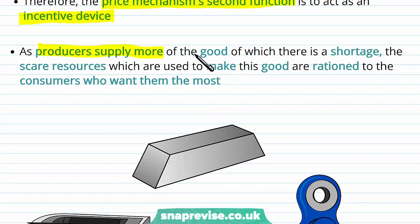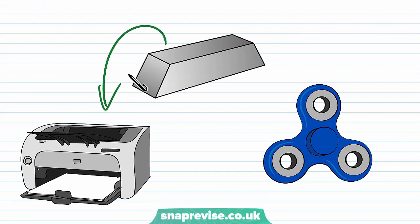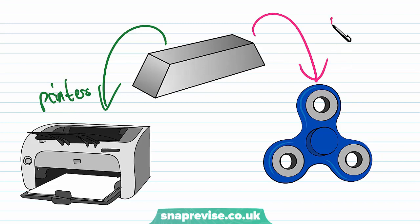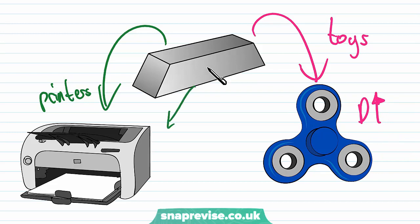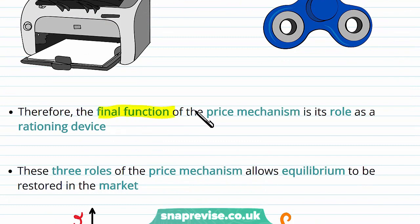As producers supply more of the good of which there is a shortage, the scarce resources which are used to make this good are rationed to the consumers who want them the most. For example, suppose we have metal which is used to make printers but also certain toys like fidget spinners. If fidget spinners are experiencing an increase in demand and there's excess demand, then there will be less production of metal into printers and more production into toys and fidget spinners. Therefore the final function of the price mechanism is its role as a rationing device.